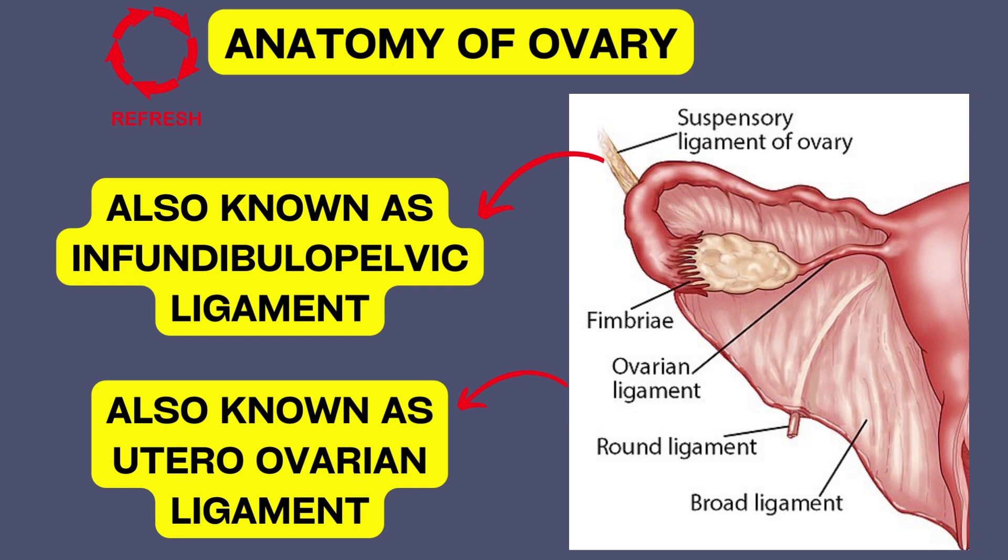Before we study about ovarian torsion, we need to be aware of the structures in the pelvis that are supporting the ovary. These are the infundibulopelvic ligament, also known as the suspensory ligament of the ovary, which joins the ovary to the pelvic sidewall. The primary ovarian vessels are likewise located in this ligament.